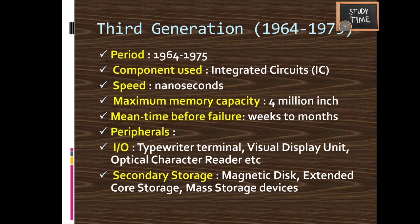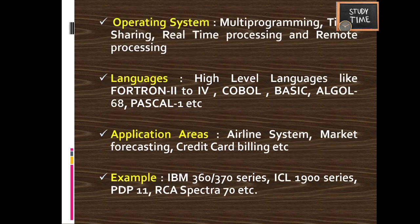Period: 1964 to 1975. Component: IC chips. Speed: nanoseconds. Maximum memory capacity: 4 million inches. Mean time before failure: weeks to months. Peripherals: typewriter terminal, visual display unit, optical character reader. Secondary storage: magnetic disk, extended core storage, mass storage devices. Operating system: multiprogramming, time-sharing, real-time, and remote processing. Languages: high-level languages like Fortran, COBOL, and BASIC. Examples: IBM 360/370 series, ICL, PDP-11, RCA Spectra 70.